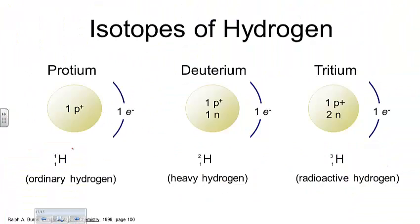There are three known forms of hydrogen. The most common is protium — it has one proton and no neutrons, written as one over one with the H symbol. Deuterium, or heavy hydrogen, is written as two over one H, because it has one proton and one neutron totaling two nuclear particles. Tritium is three over one H, with one proton and two neutrons — this form of hydrogen is actually radioactive. We label them hydrogen-1, hydrogen-2, or hydrogen-3.